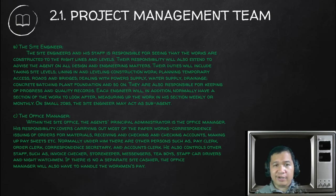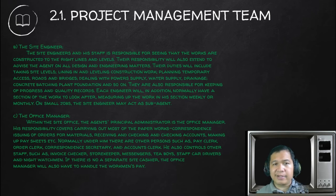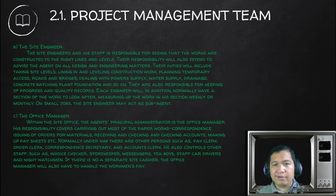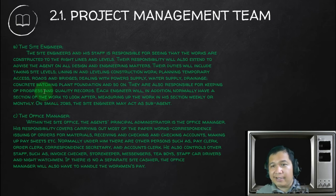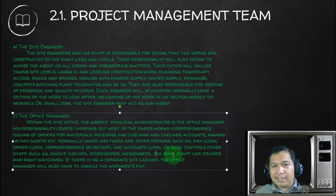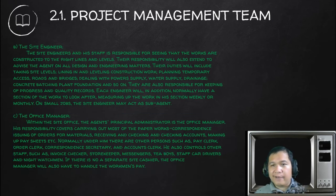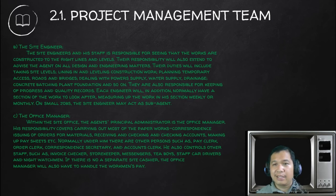Then you also have the office manager. Within the site office, the agent's principal administrator is the office manager, who is responsible for covering most of the paperwork, correspondence, issuing orders, materials, receiving and checking invoices. Normally under him there are other persons handling orders, correspondence, and accounts. He also controls other staff such as time checkers, storekeepers, messengers, and night watchmen. The office manager also handles what is called a 'boy' — a term unique to the Middle East — hire staff whose primary function is to provide service to the engineers and other staff.